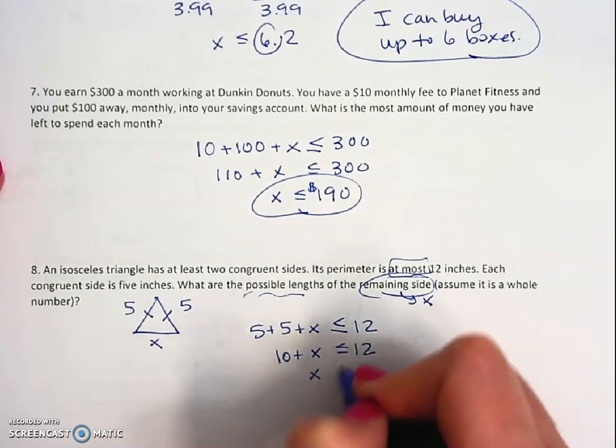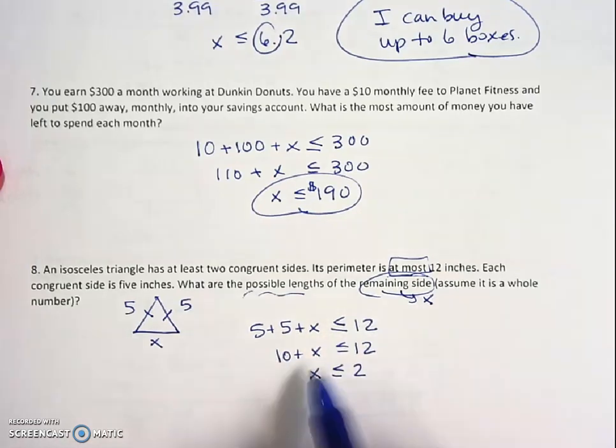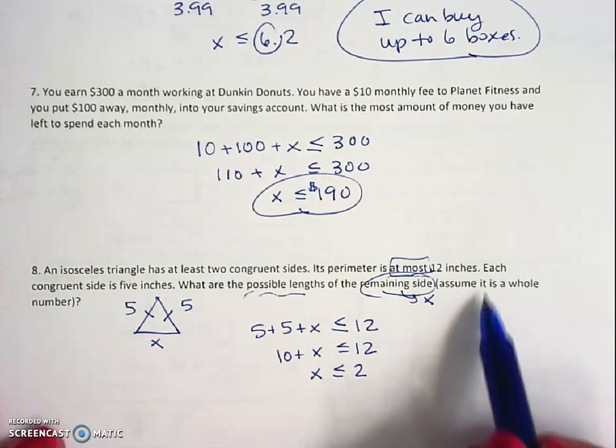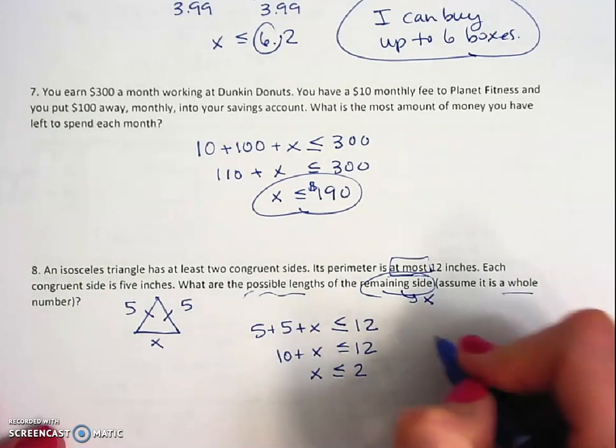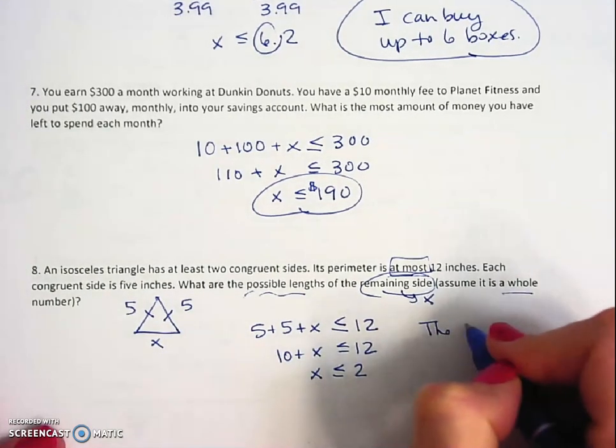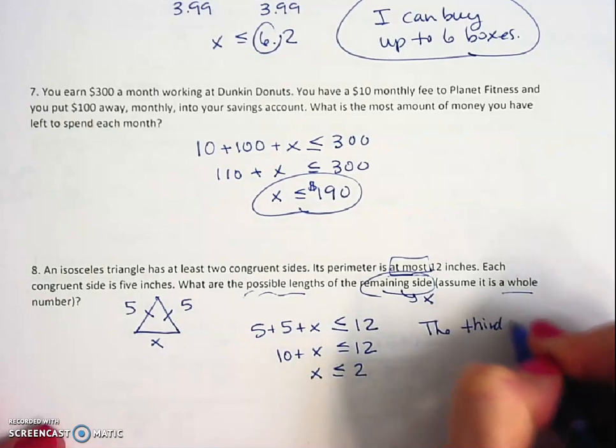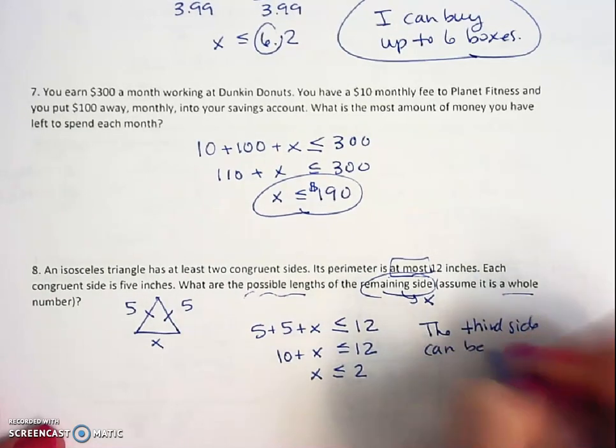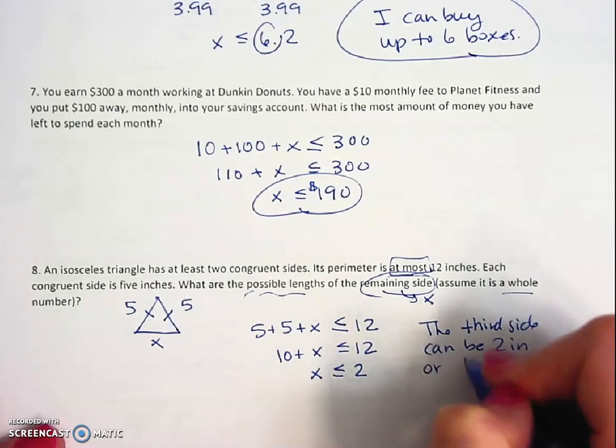Subtract the 10, and that side can be less than or equal to 2. Because I subtracted 10 to both sides, so that really means I have two options. If it's a whole number, then the third side can be 2 inches or 1 inch.